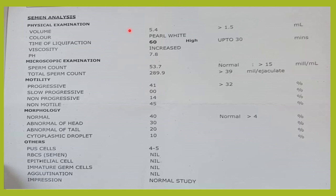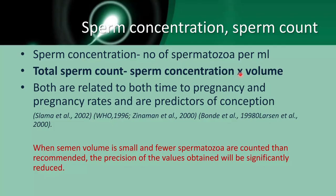In a semen analysis report the sperm count should be more than 15 million per ml, and the total sperm count in the ejaculate should be more than 39 million per ejaculate. The total sperm count is for the entire ejaculate and sperm count is per ml. Both sperm concentration and total sperm count are related to the fertile capacity of the man, pregnancy rates, and are predictors of conception.